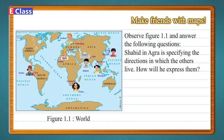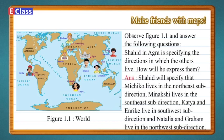Shahid in Agra is specifying the directions in which the others live. How will he express them? Answer: Shahid will specify that Michiko lives in the north-east sub-direction, Meenakshi lives in the south-east sub-direction, Katya and Enrique live in the south-west sub-direction, and Natalia and Graham live in the north-west sub-direction.